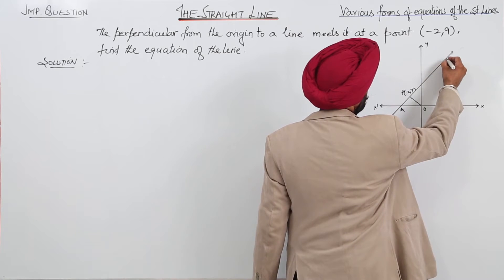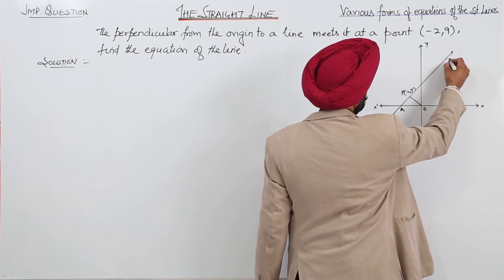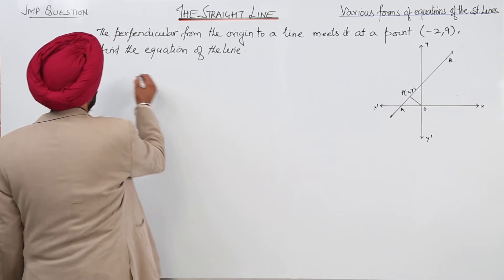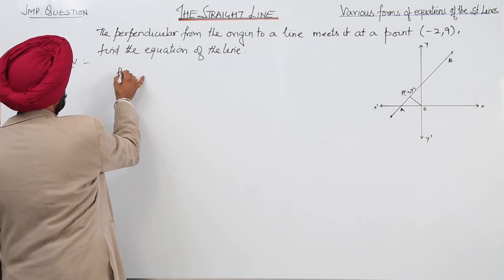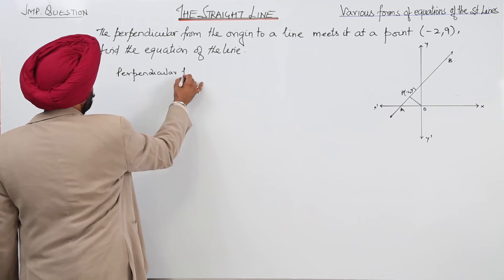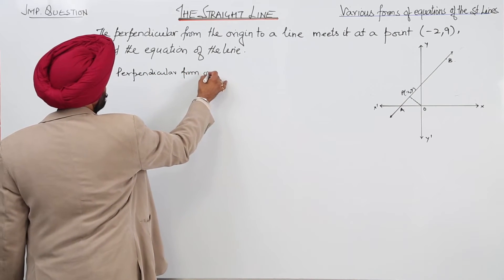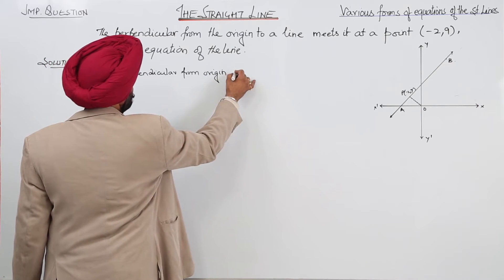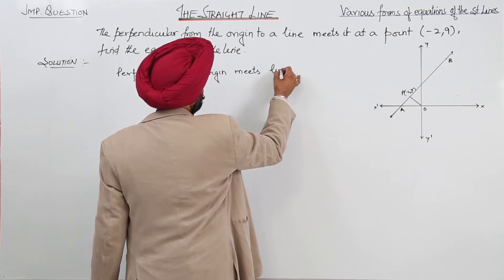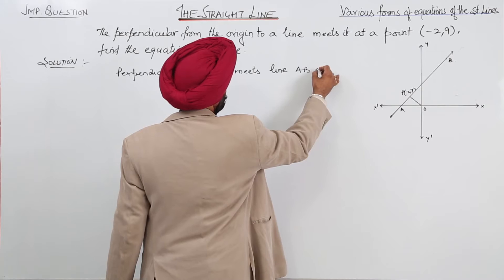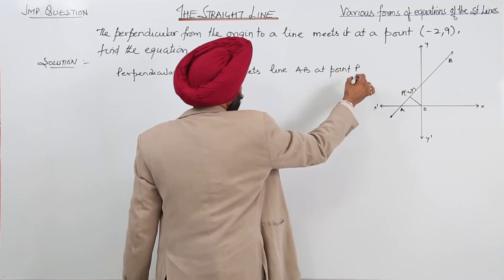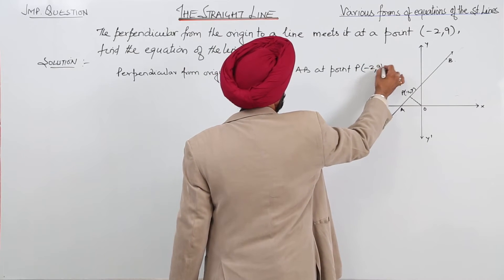Let this point be A, and any point here will be B. The perpendicular from the origin meets line AB at point P, which has coordinates minus 2, 9.